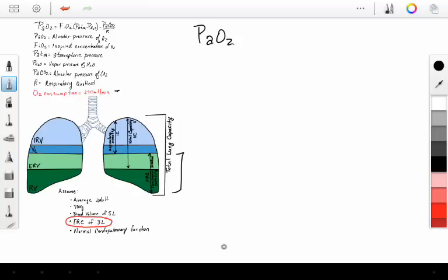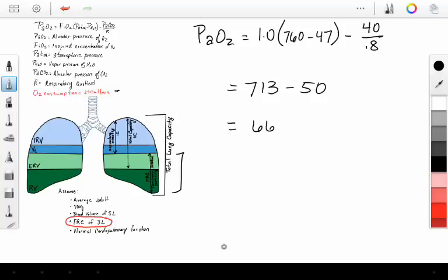So now we can do our alveolar gas equation, and we can assume that we have 100% oxygen. We have our atmospheric pressure minus our water vapor pressure minus our average CO2 over 0.8, the respiratory quotient. Now this is going to equal 713 minus 50, and this is going to equal 663. So that's 663 millimeters of mercury oxygen tension in the alveolus.